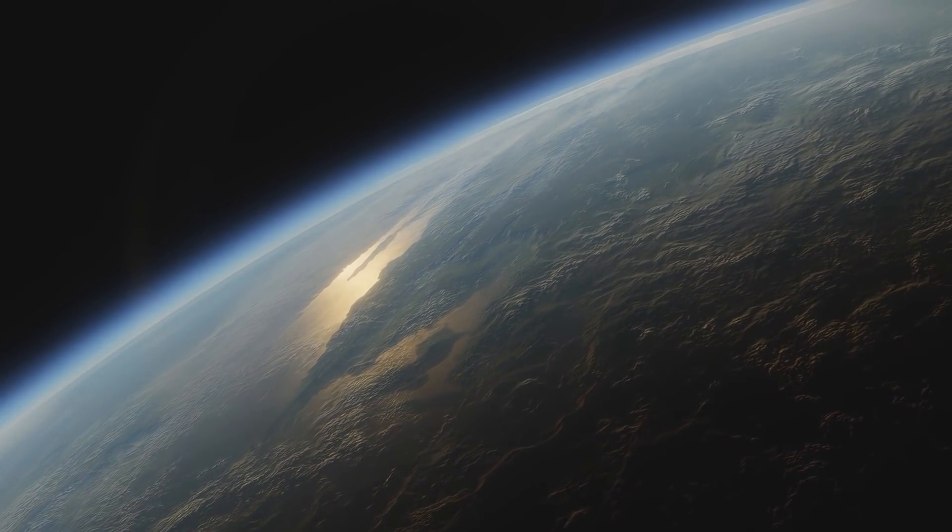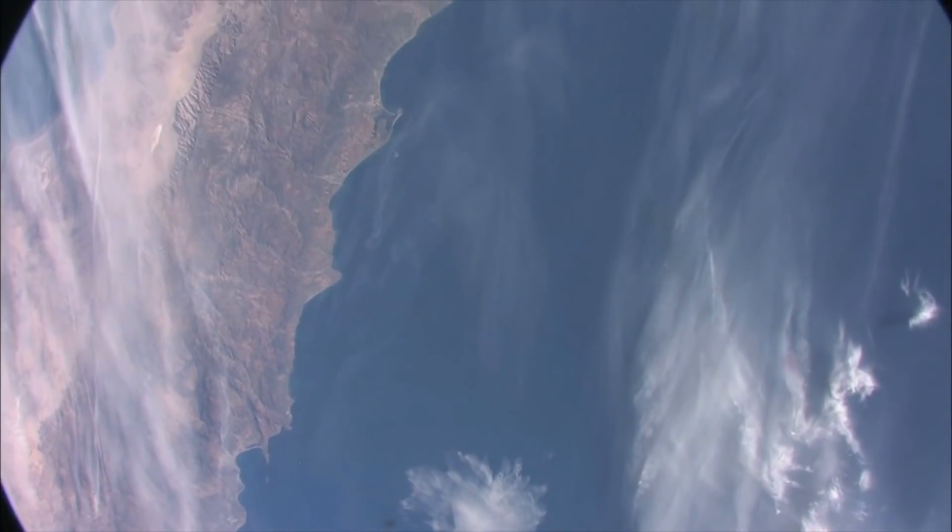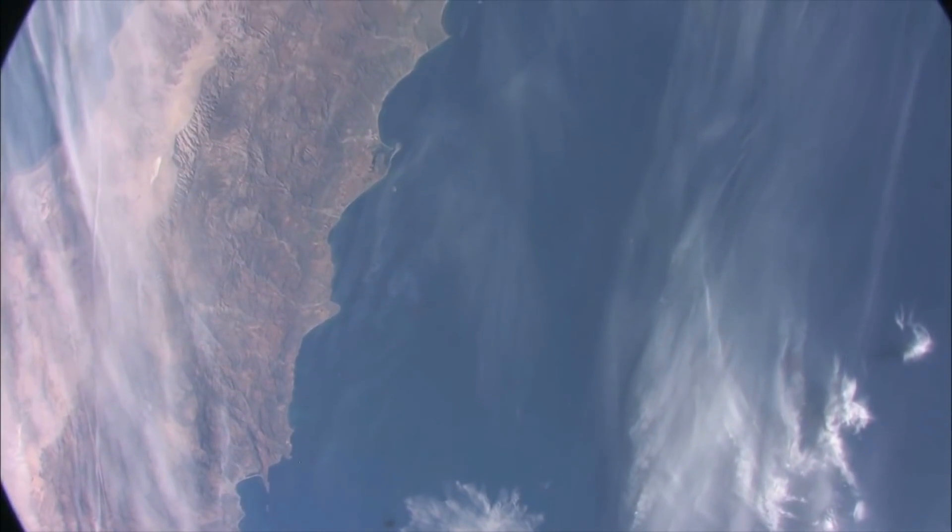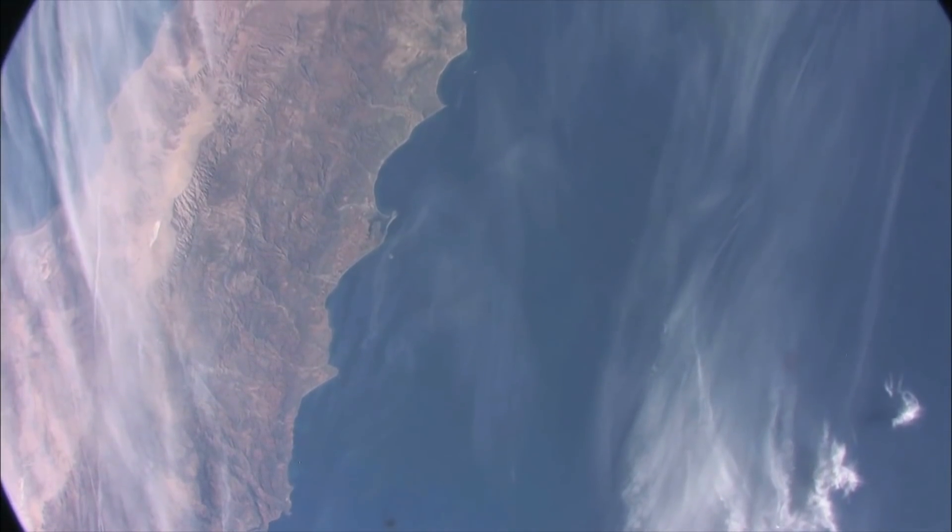Every year, thousands of objects approach the Sun and our planet. Although 99% of these can be explained as space debris and other man-made objects, some of them aren't so easy to explain.